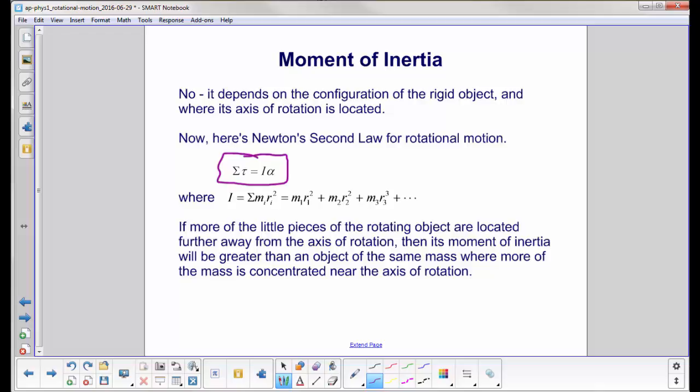If we have more of the little pieces of the rotating object are located further away. So we're going to take a couple examples here. We're going to take a sphere.